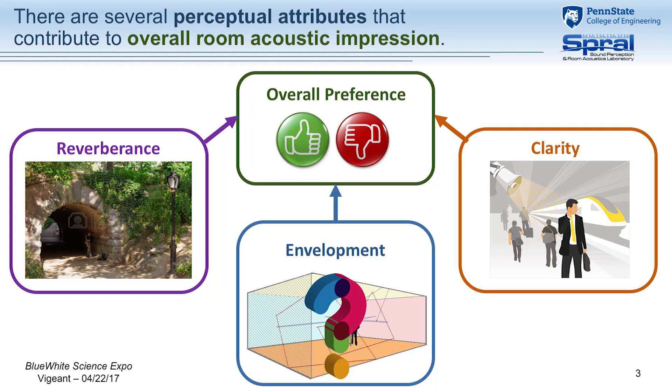If you ask someone what they think makes good acoustics, you're going to get a range of answers. They'll use lots of different terminologies — terms like texture, or the hall sounds warm, or there's good balance between the orchestra. What we need to do is come up with a set list of vocabulary covering all these various attributes that contribute to overall room acoustic impression, or more generally, hall preference.